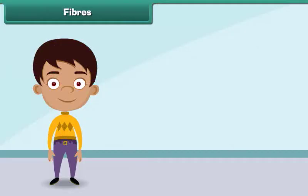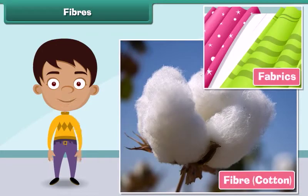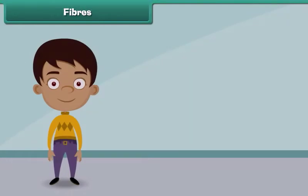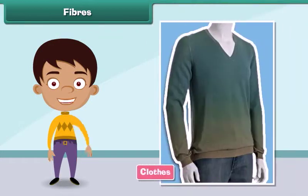Fibers are the raw material used in manufacturing clothes. Fibers are transformed into clothes through a series of steps. First, raw fibers are twisted together to form long strands of threads known as yarns. The yarns are then woven and knitted to form fabrics. Finally, fabrics are used to make clothes of different sizes and shapes to suit the needs of the people.